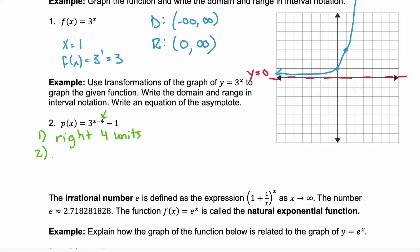Next, you look for stretches and shrinks, and we don't have any. Our mother function is 3^x. We're not multiplying by anything, so no stretch, no shrink. Next, we're looking for reflections. Are we multiplying by a negative anywhere? No, so there's no reflections. And lastly, we're looking for those vertical shifts. Are we shifting up or down? That's where that -1 comes in. We're going to go down 1 unit.